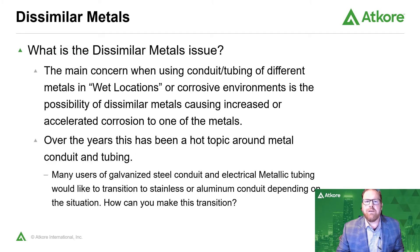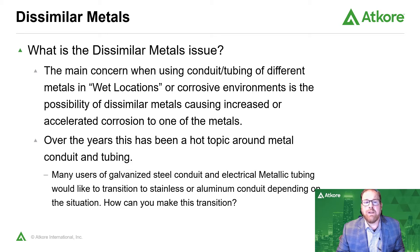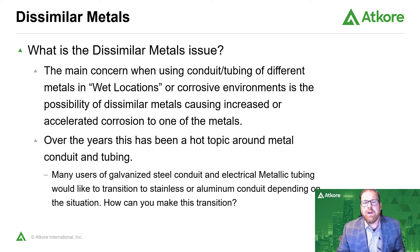So what is the dissimilar metals issue? The main concern when using conduit and tubing of different metals in wet locations or corrosive environments is the possibility of dissimilar metals causing increased or accelerated corrosion to one of these metals. Over the past few years this has become a hot topic around metal conduit and tubing. Many users of our galvanized steel rigid conduit or our galvanized electrical metallic tubing would like to transition to stainless steel conduit or aluminum conduit depending on the situation. How do you make the transition without causing accelerated corrosion, and which types of these metals are allowed to be used together? Those are the topics we'll be discussing today.